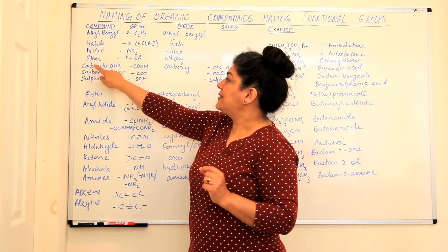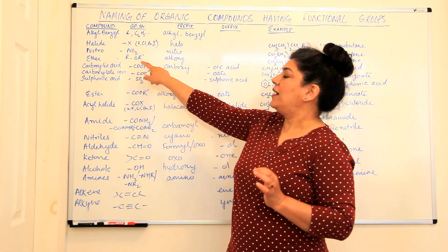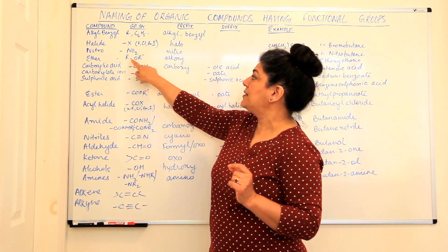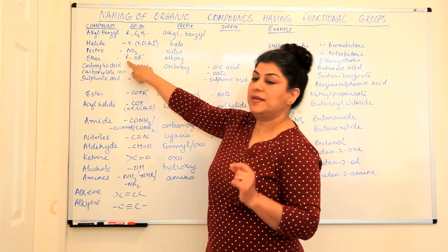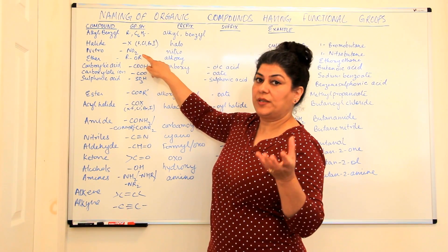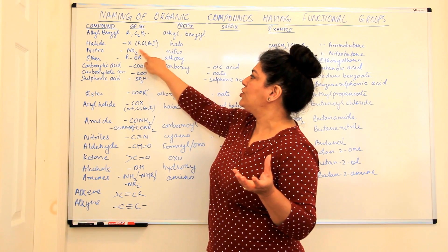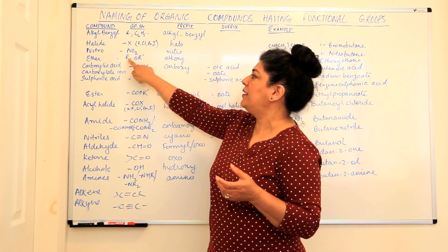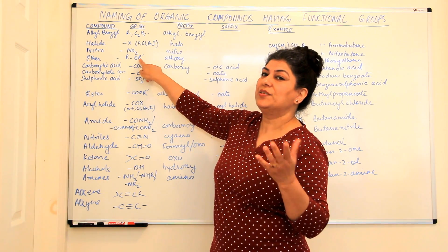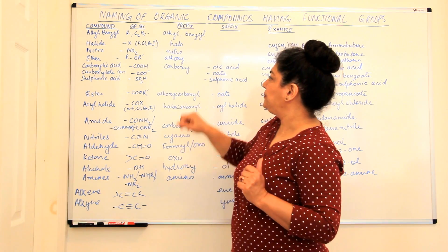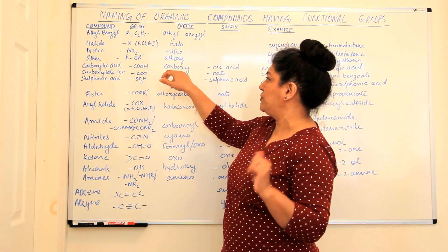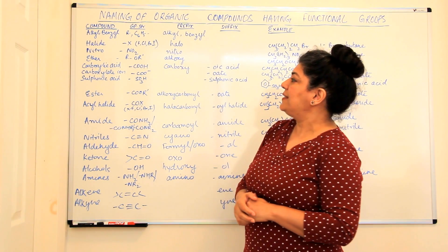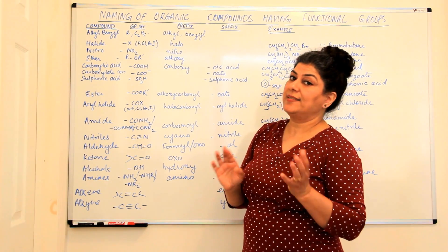The next is ether. Ethers are the group is ROR where R is the alkyl group to which this has been attached or the parent hydrocarbon to which the OR' is attached. R' means that the R and the R' may be different alkyl groups. It is always written as alkoxy that is as a prefix.